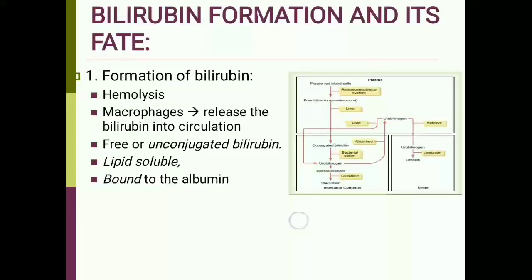Today we'll discuss bilirubin formation, its fate, and jaundice. Hemolysis causes macrophages to release bilirubin into the circulation. This bilirubin is known as free or unconjugated bilirubin — it is lipid soluble, and in the plasma it is bound to albumin, so it is also known as protein-conjugated bilirubin.